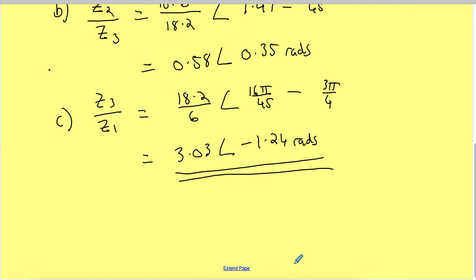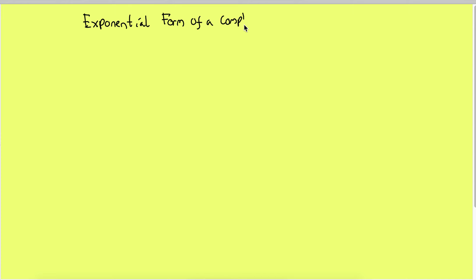Now remember we did multiply and divide complex numbers in rectangular form. You need to be able to divide complex numbers in rectangular form in your assignment — it is one of the questions. It will say do all your working in rectangular form, so do not use the polar method. But polar is useful for other things — it's quicker. We don't use it when there's addition and subtraction in the question. Next thing is exponential form of a complex number.